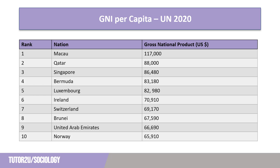Another way in which economic measures are used is through GNI per capita. Figures from the UN show a very different picture once the nation's population is taken into account, with some surprising names at the top of the rankings. Macau, an administrative region of China, tops the list, while Qatar, host of the 2022 World Cup, comes in at second, and Singapore comes in at third. Another oil-producing nation, the United Arab Emirates, comes in quite high at ninth.